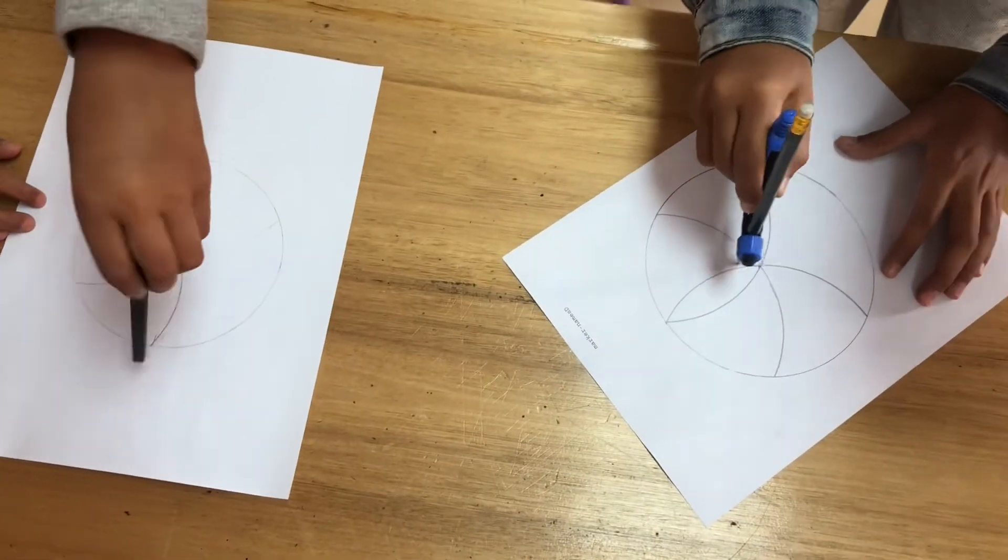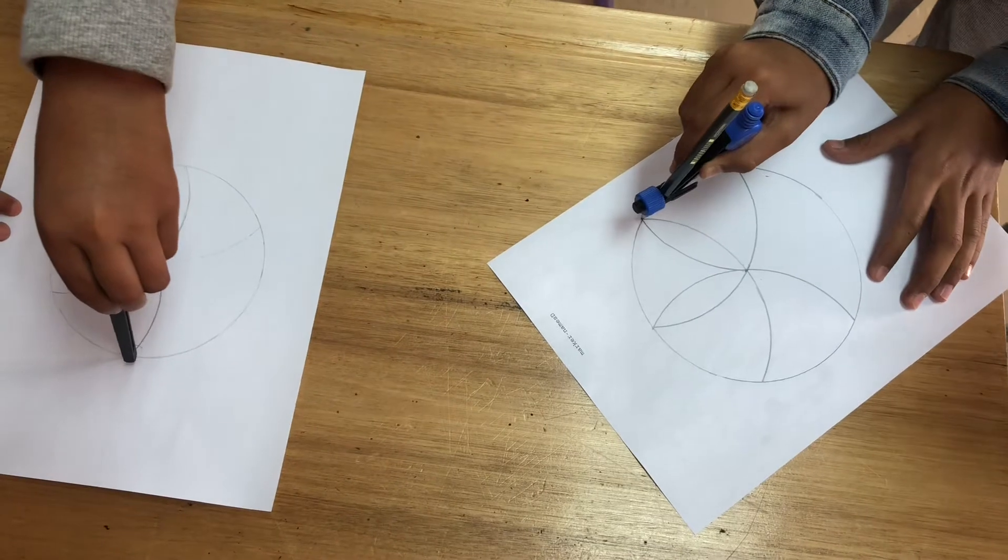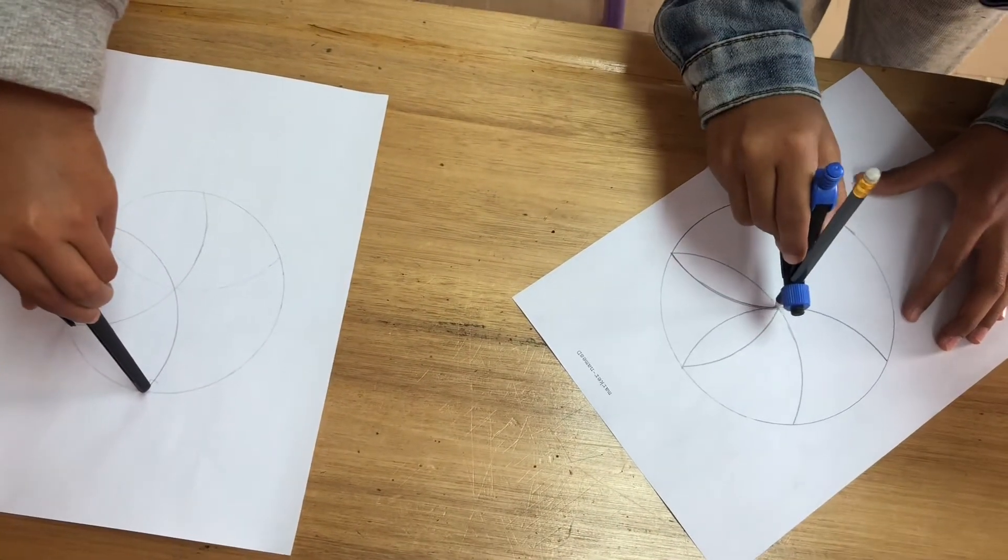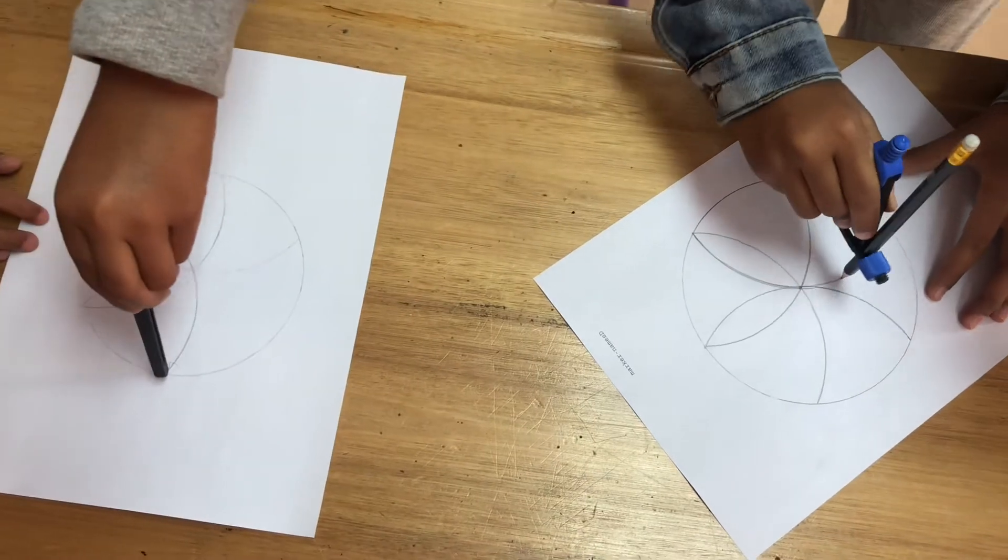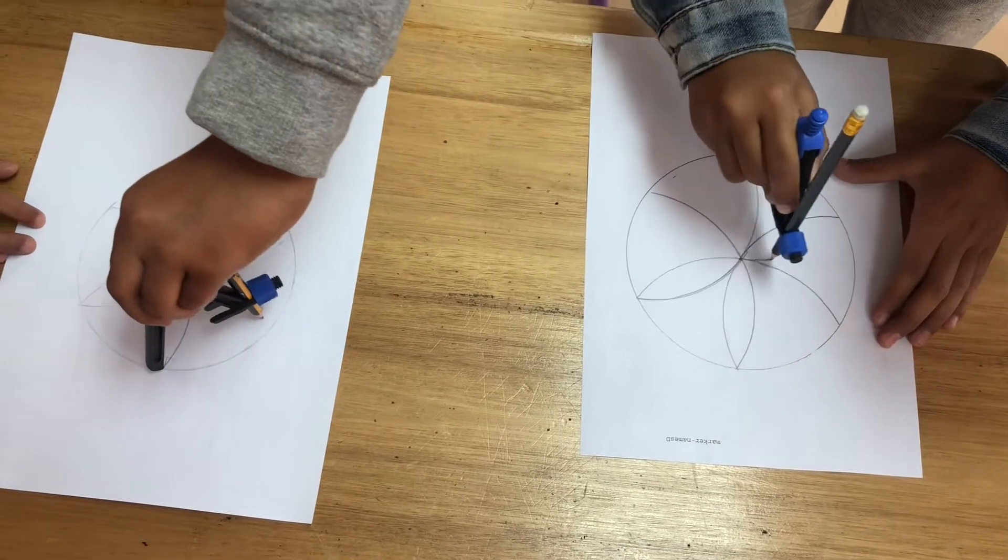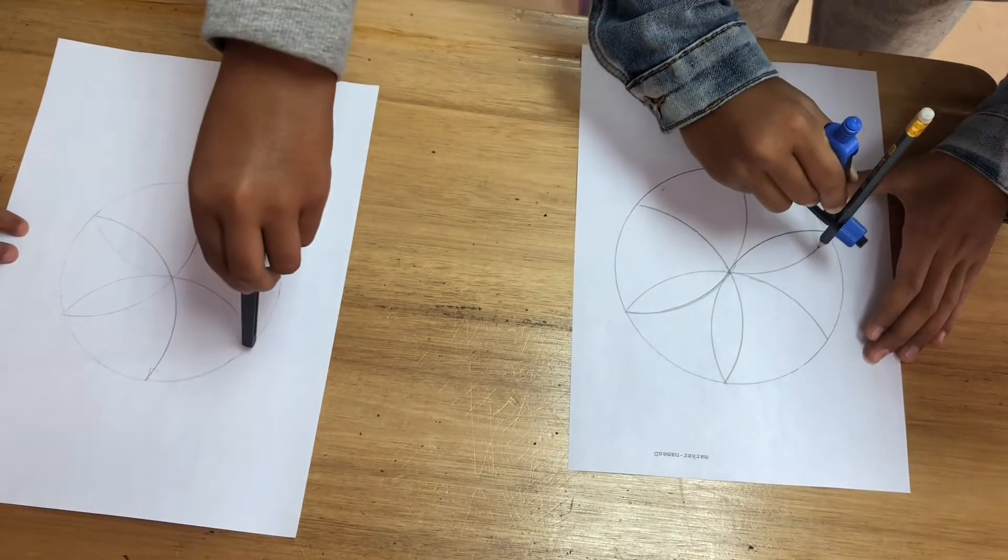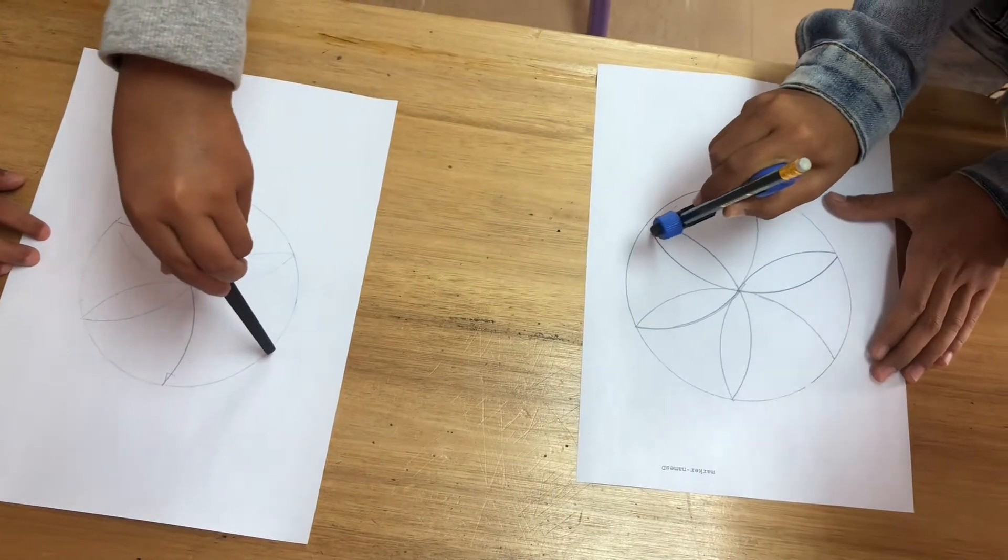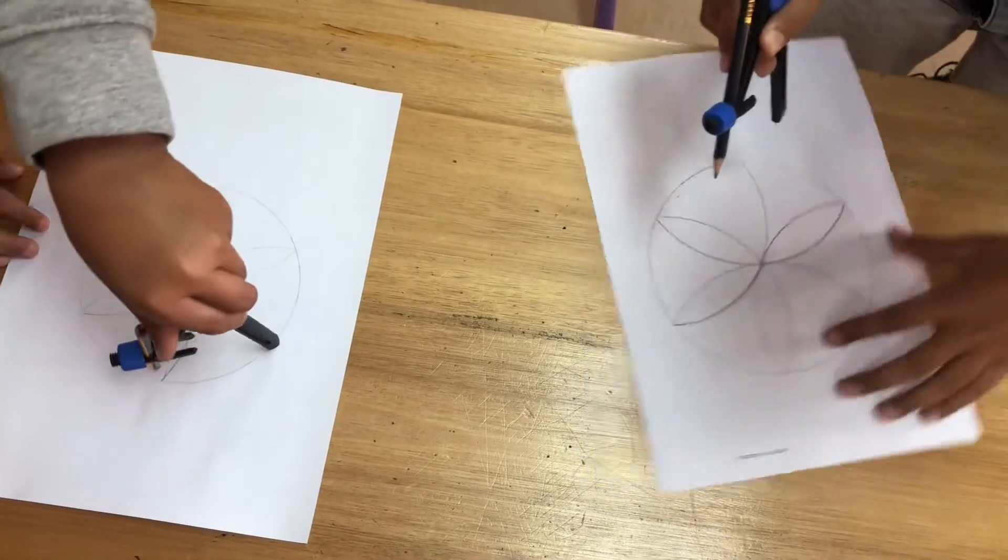So I can see the petals being created there. If your pencil is sharp and your compass is secure, then you should be able to make these quite accurate. And then we're getting three petals made there. Three, four petals. And how many petals should we get in total? Six. Six.